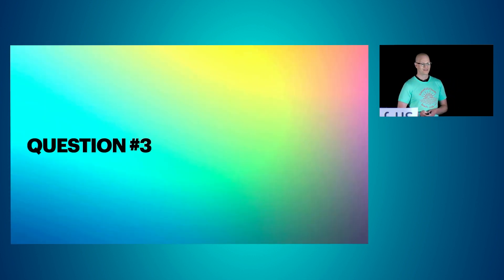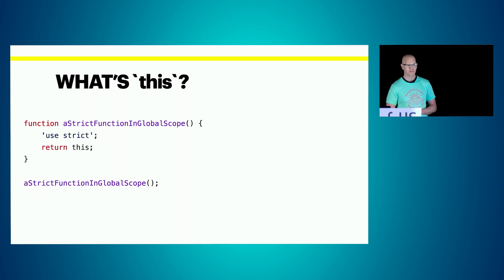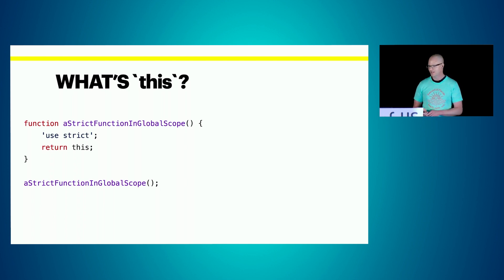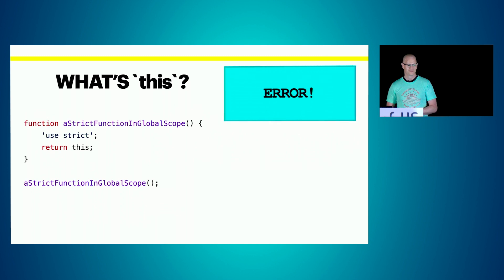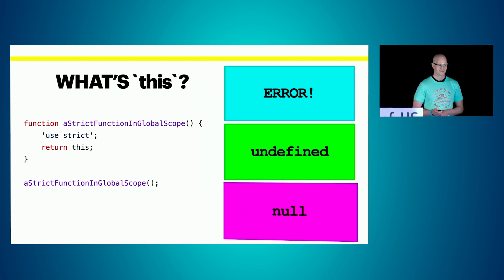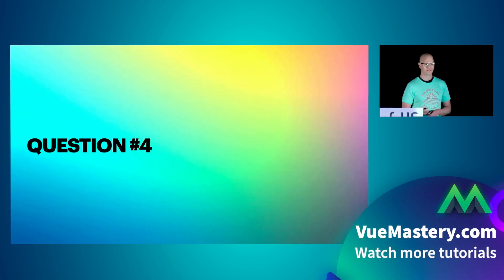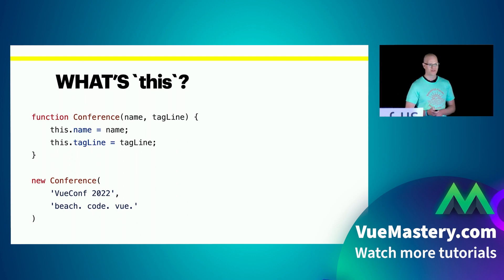Question number three: this is a strict function declared in global scope using the 'use strict' statement, which changes how JavaScript is interpreted. We're returning 'this' and invoking the function. What's 'this'? Is it error, is it undefined, or is it null? The answer is undefined.